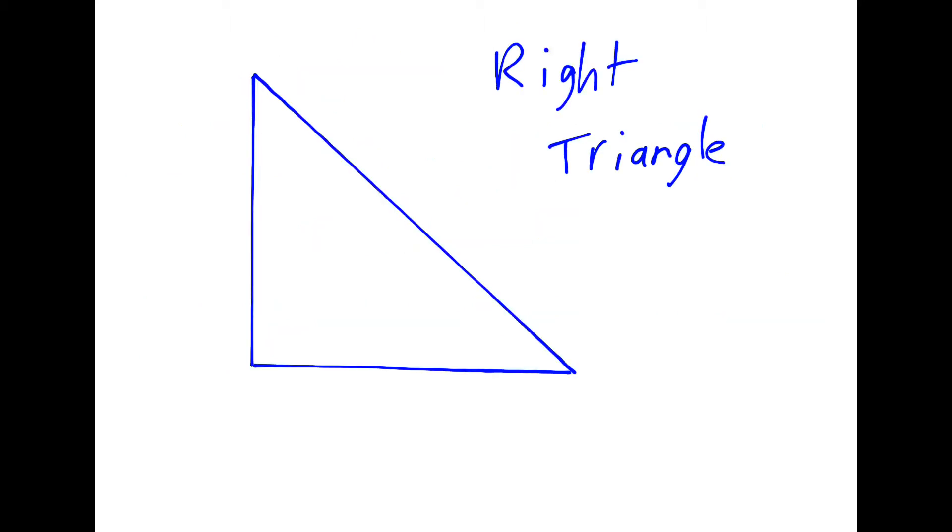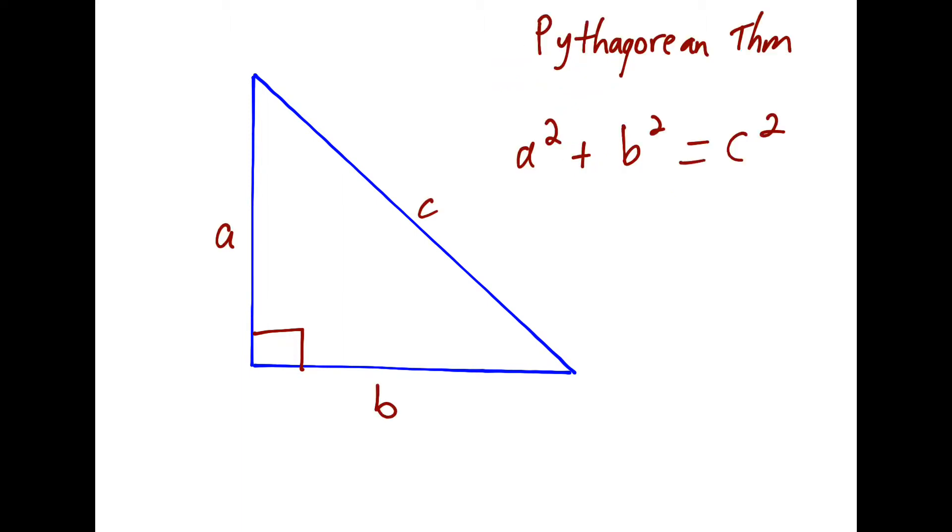So we probably know this is a right triangle because this angle over here is 90 degrees, and we label it with this little square. So what do we know so far about right triangles, at least from this year in math? We used Pythagorean's theorem to say that a squared plus b squared is equal to c squared.